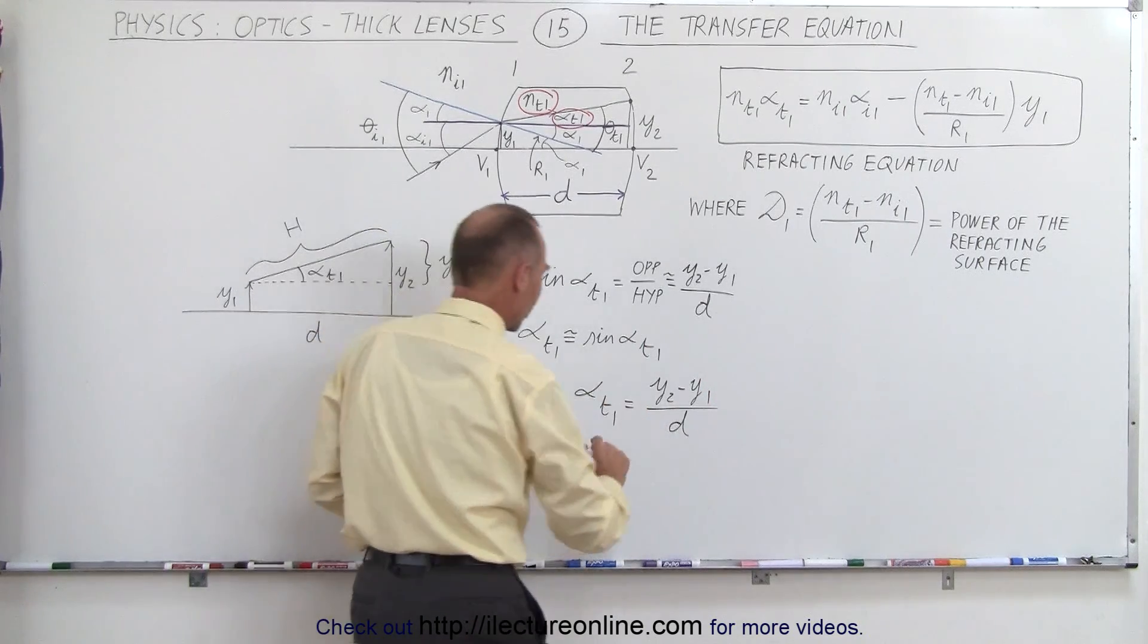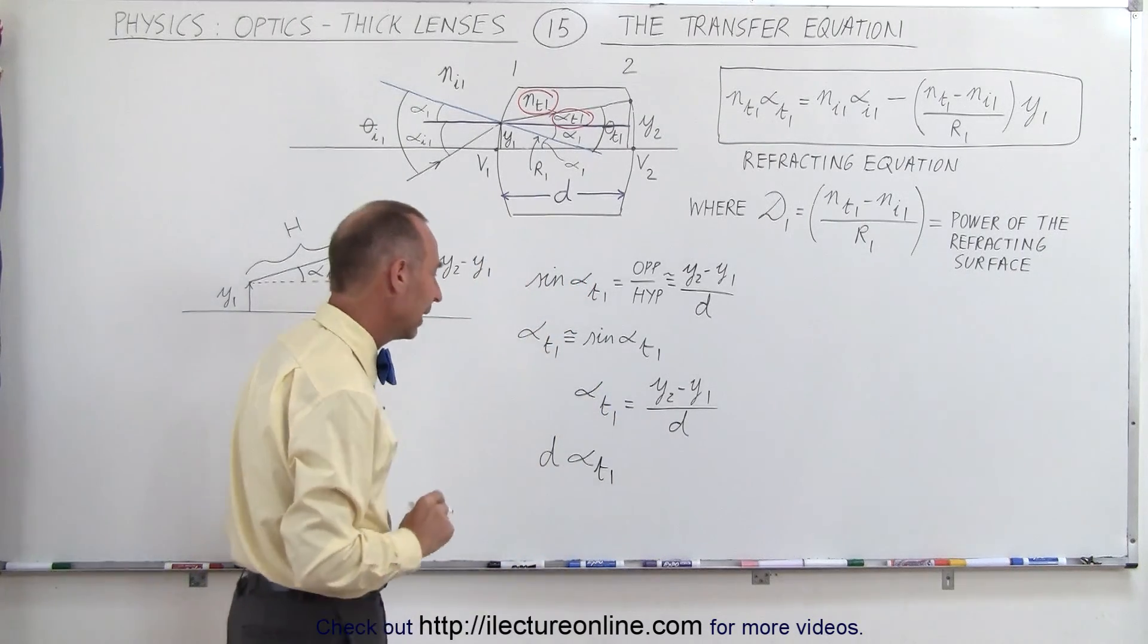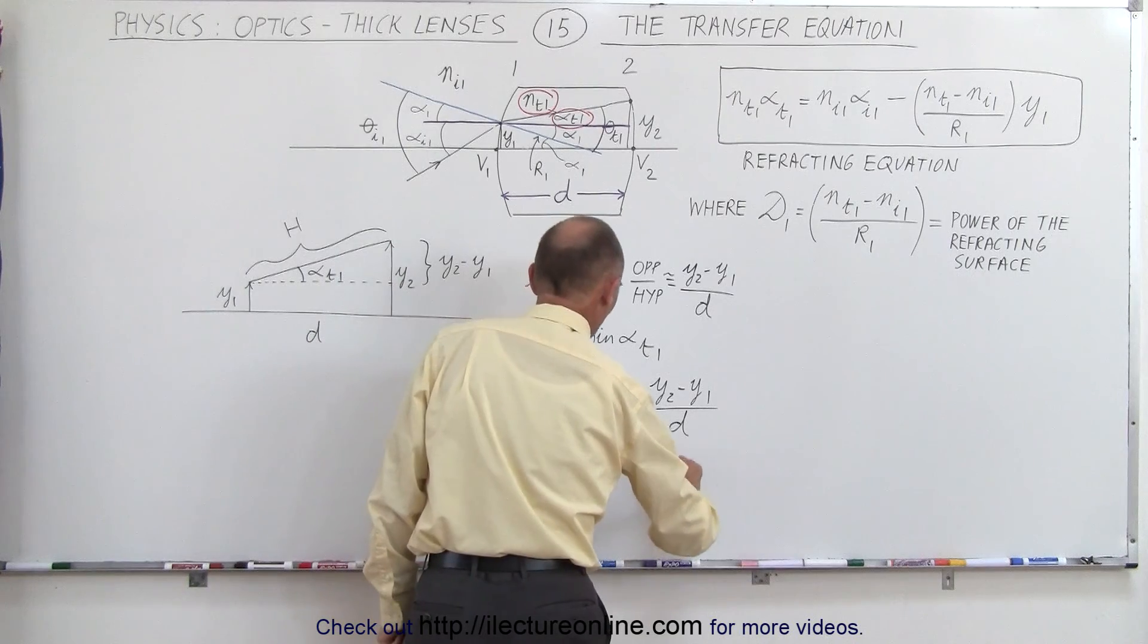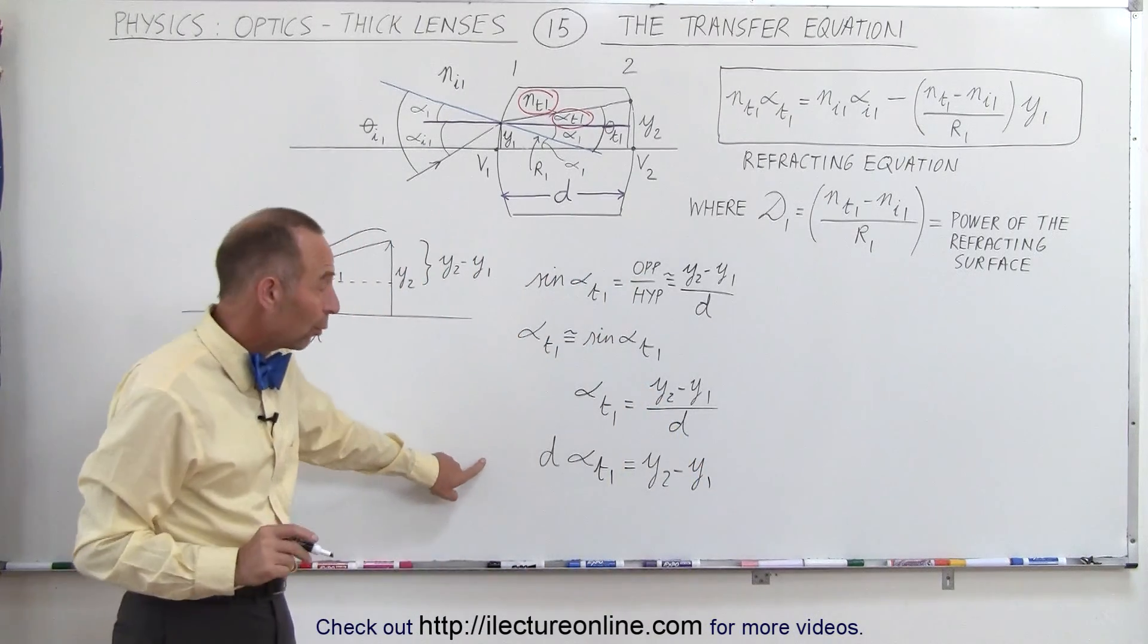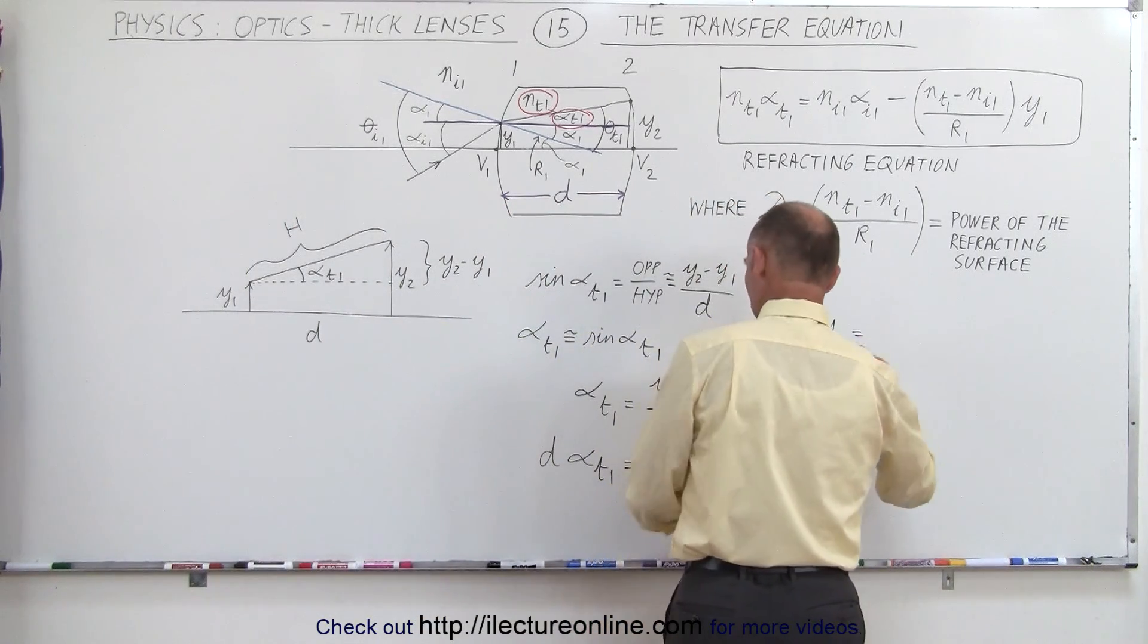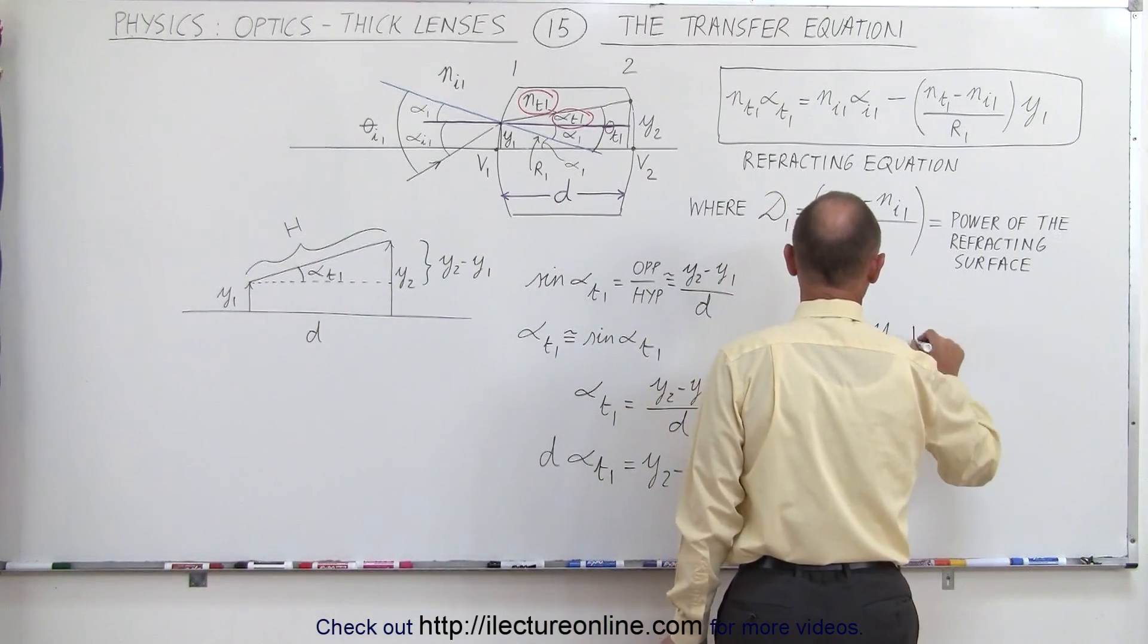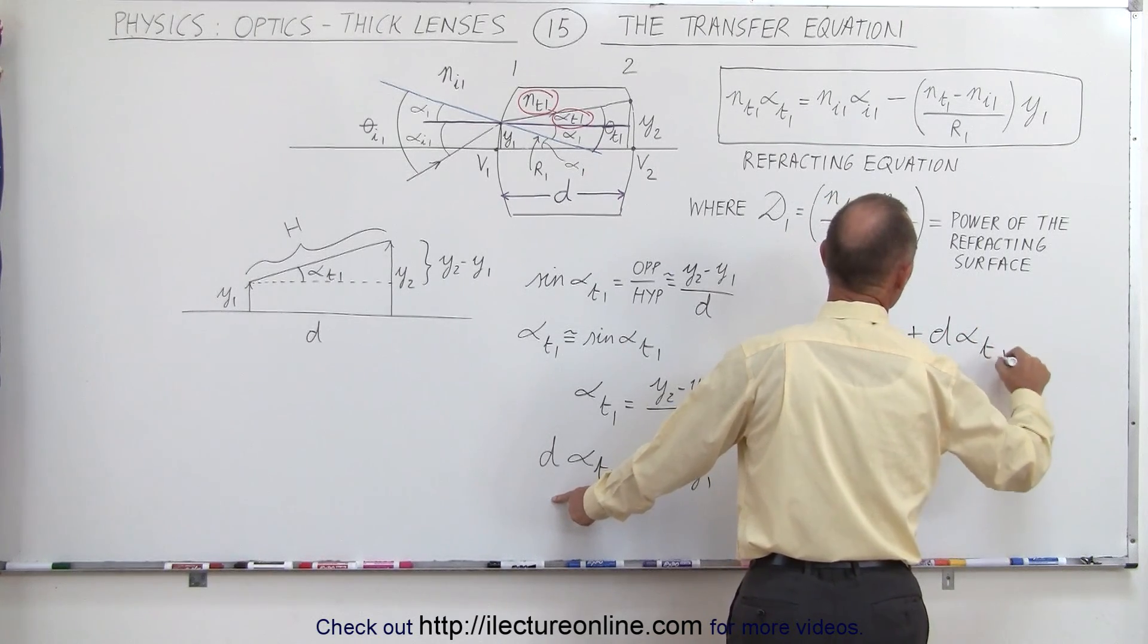We're going to multiply this across. So we have alpha t1 times d. I'll put d in front. And that equals y2 minus y1. And if we solve this equation for y2, we can say that y2 is equal to y1 plus d times alpha t1.